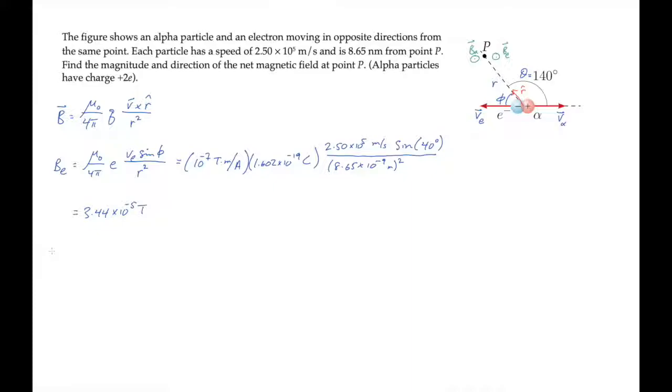If we write the expression for the field produced by the alpha particle, we find it equals mu naught over 4 pi times the magnitude of the alpha particle's charge, that's 2 times e, times v alpha sine of theta over r squared.